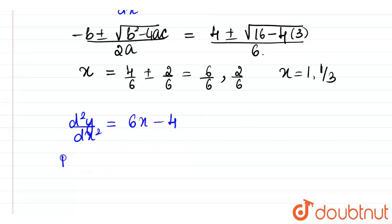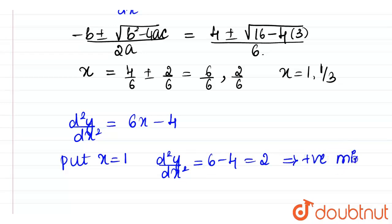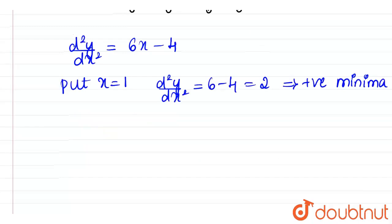So let's put x is equal to 1. So if we put x equal to 1, d square y by dx square will now be equal to 6 minus 4 which is equal to 2. That means this is positive. Hence, it is going to be minima. So 1 value is minima.